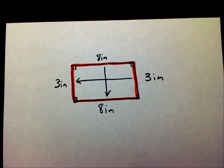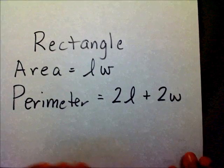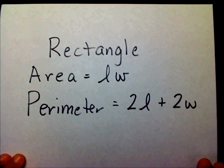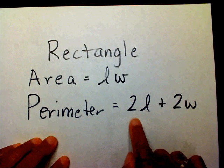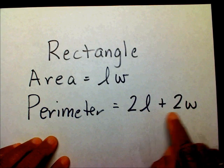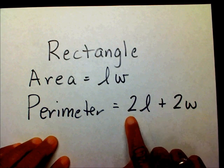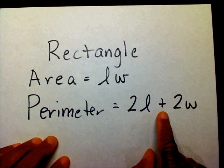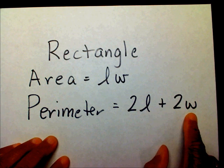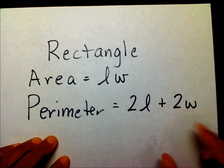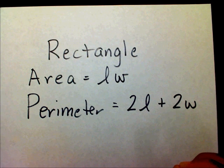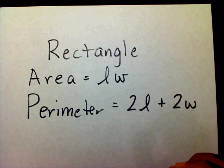In order to find the length of that red area, we're going to need a formula. For a rectangle's perimeter, you're going to use the formula 2L plus 2W. That means 2 times the length, plus 2 times the width. So you're going to find this product, then find this product, and then add the two together. Alright, let's get started.